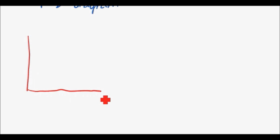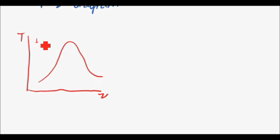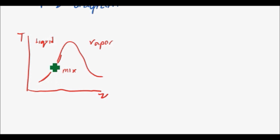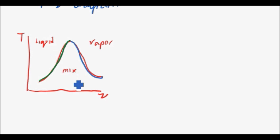Looking at the temperature versus specific volume graph, the shape of the dome looked something like this. Here you had liquid, you had a mixture of liquid and vapor inside the dome, and then vapor in the region over here. This line was the saturated liquid line, and this over here was the saturated vapor line. In this section we had compressed liquid, here we had the mixture, and here we had superheated vapor.